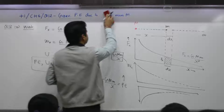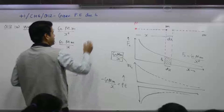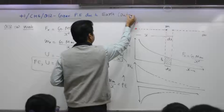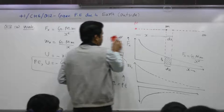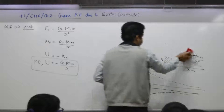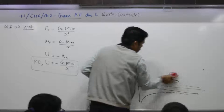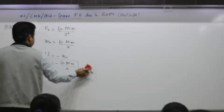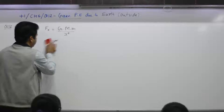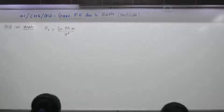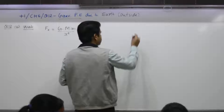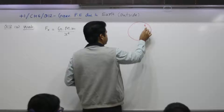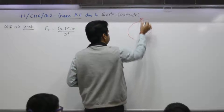Part B deals with gravitational potential energy due to the Earth. Earth is not a point mass — it is a sphere with mass distributed throughout its volume.